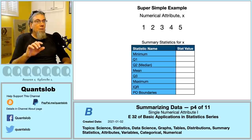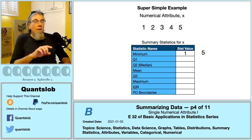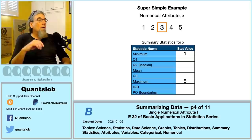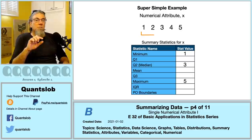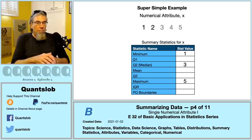The minimum value of x is 1 and the maximum is 5. The median value — Q2, the second quartile — is the middle value in our ordered set. We have an odd number of values (five), so 3 sits right in the middle. Q2 divides our ordered set into two sets of equal size: a lower set on the left and an upper set on the right. To calculate Q1, the first quartile, we focus on the smaller numbers to the left of Q2 and find their median.